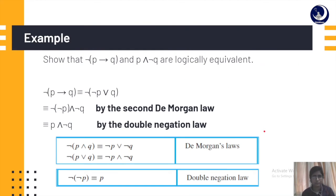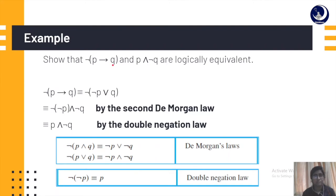Let's see an example: show that the negation of 'if p then q' and 'p and not q' are logically equivalent. If we don't apply the laws, we would have to derive a whole truth table — assign values for p and q, find p implies q, apply the negation, then find not q values, and perform the conjunction p and not q. That takes a lot of time.